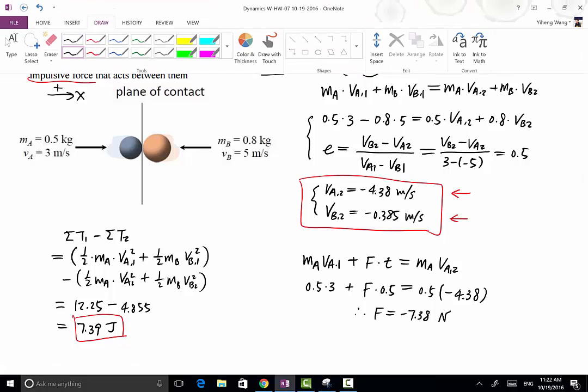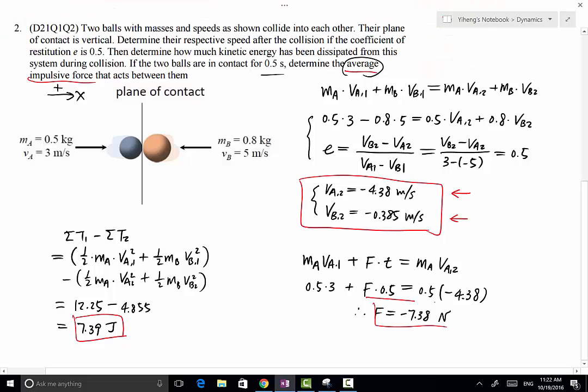The negative sign indicates that the force exerted by ball B on ball A is to the left, since we defined right as the positive direction. This force acting to the left agrees with common sense.